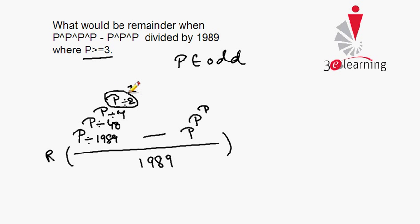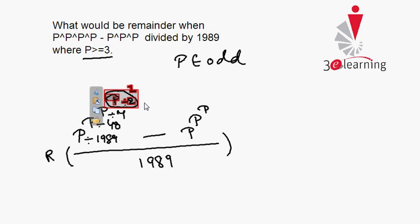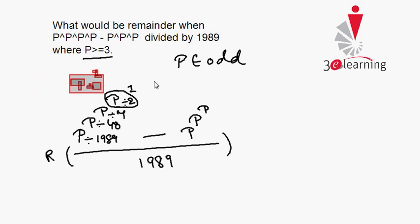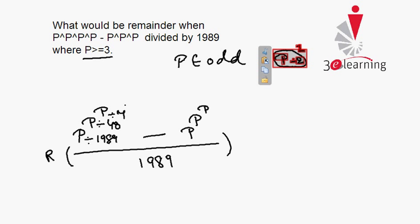If our remainder is 1, by cyclicity what we do is replace this power with 1. So I am removing this value and replacing it with the value 1.